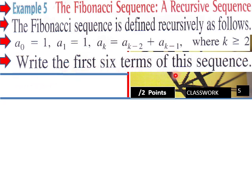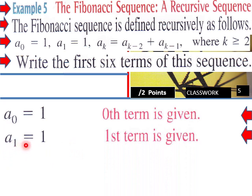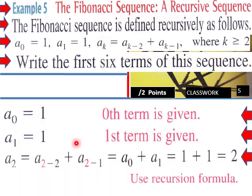Write the first six terms of this sequence. We have the zeroth term a₀ = 0 and the first term a₁ = 1 given. So a₂ = a₀ + a₁ = 0 + 1 = 1.